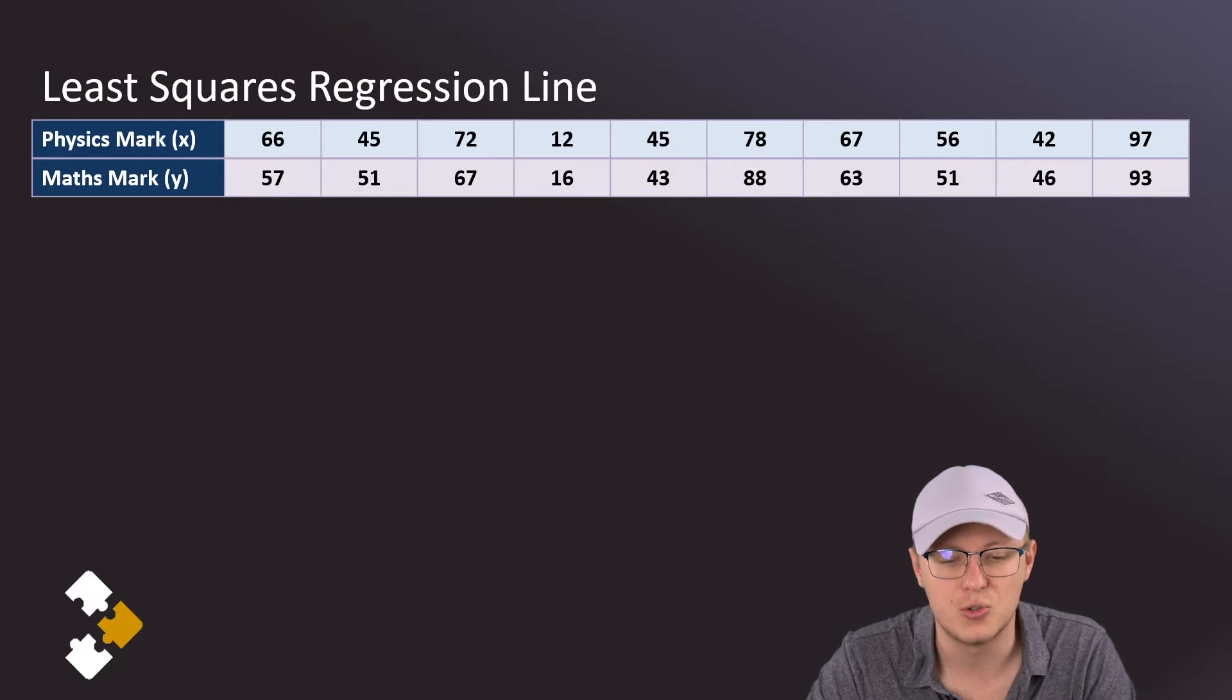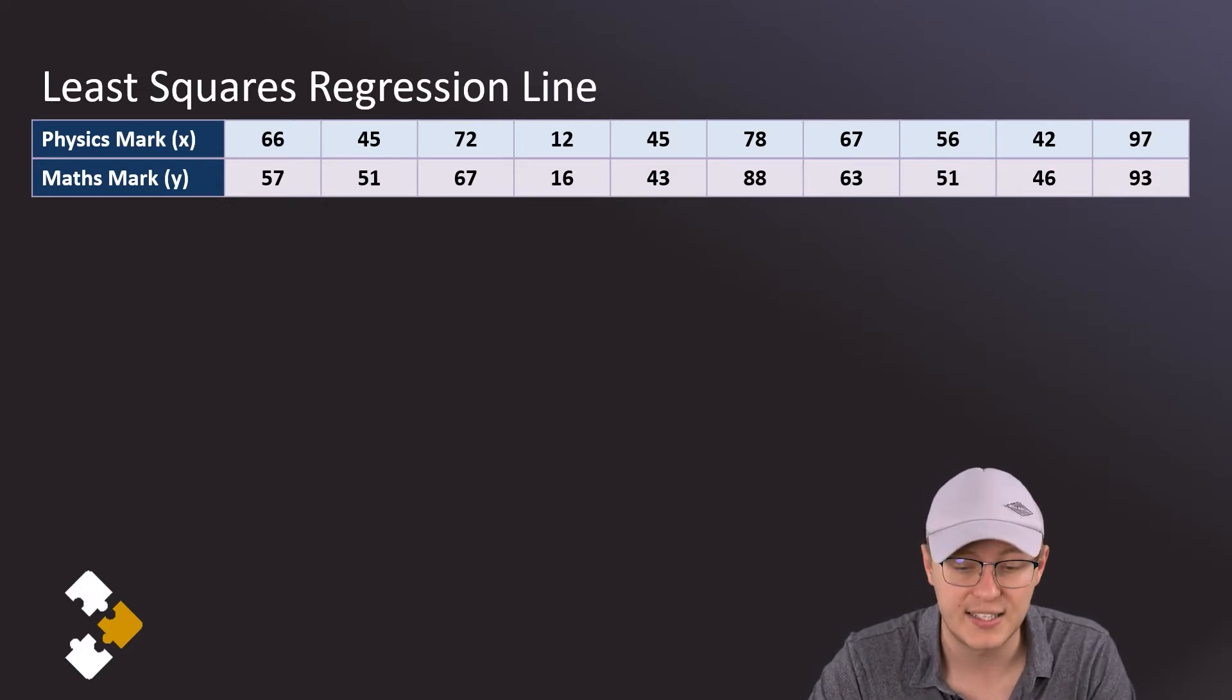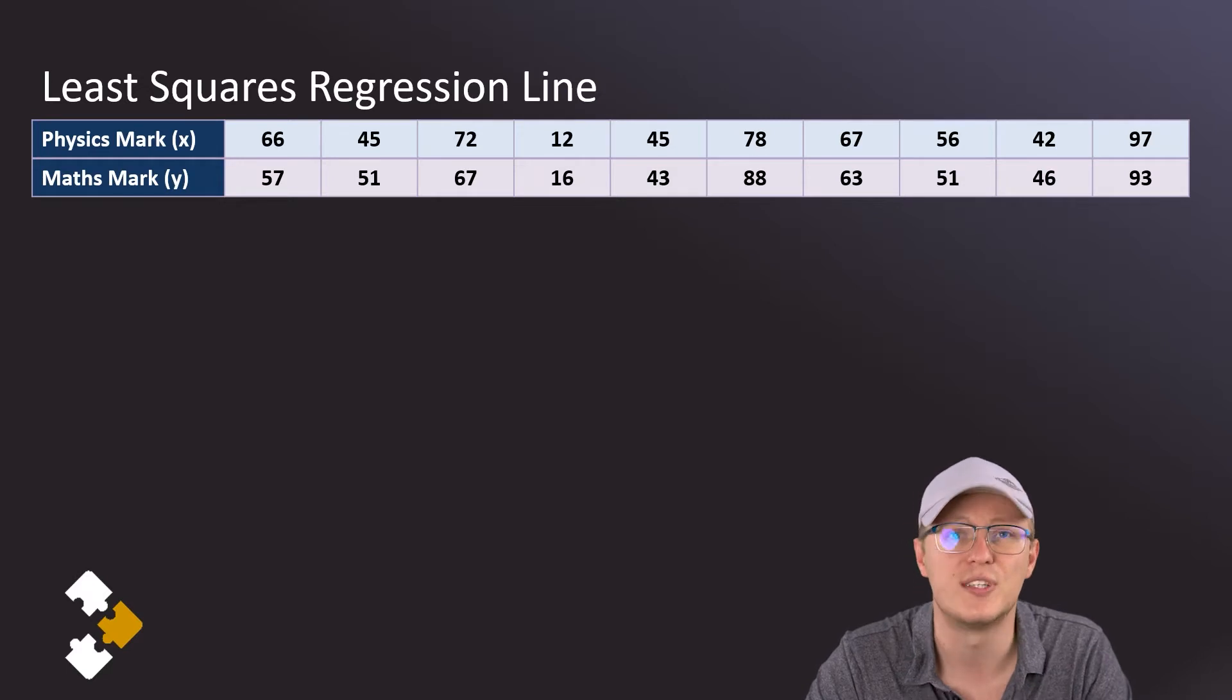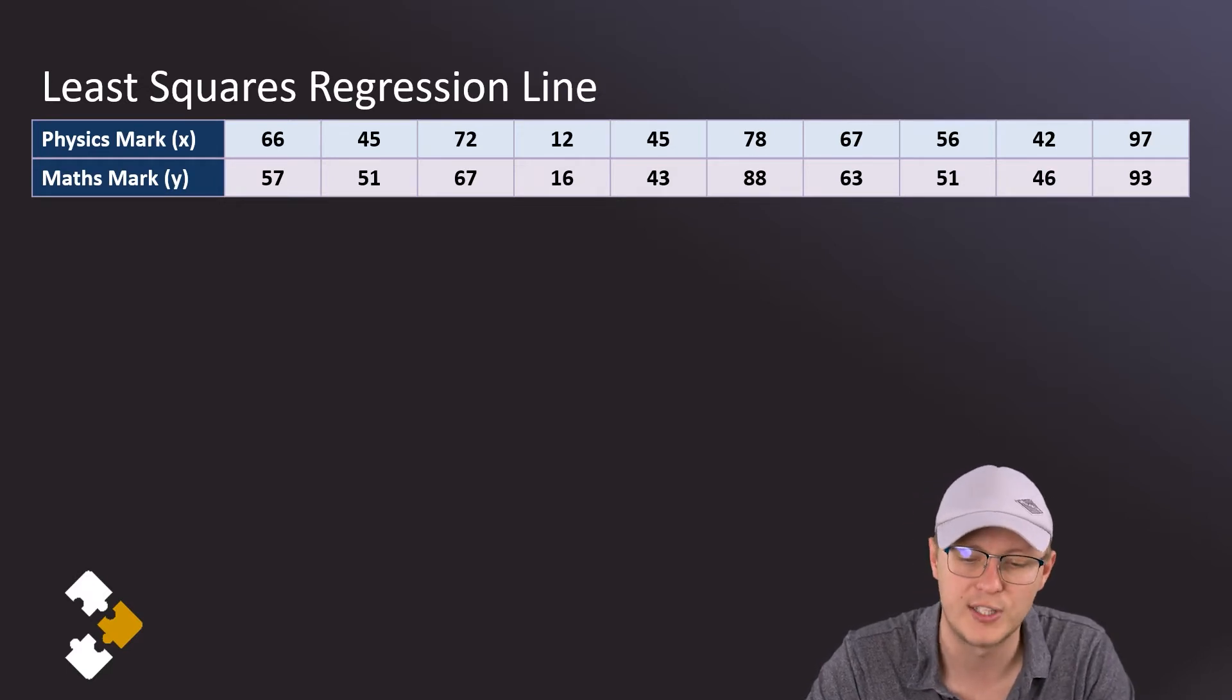Now whatever calculator you're using, it probably has a statistics mode, so you select the mode and then you select the statistics mode. Now on this calculator I get a bunch of options: the first one says 1-Var, the other one says A+Bx, and so it goes on and on.